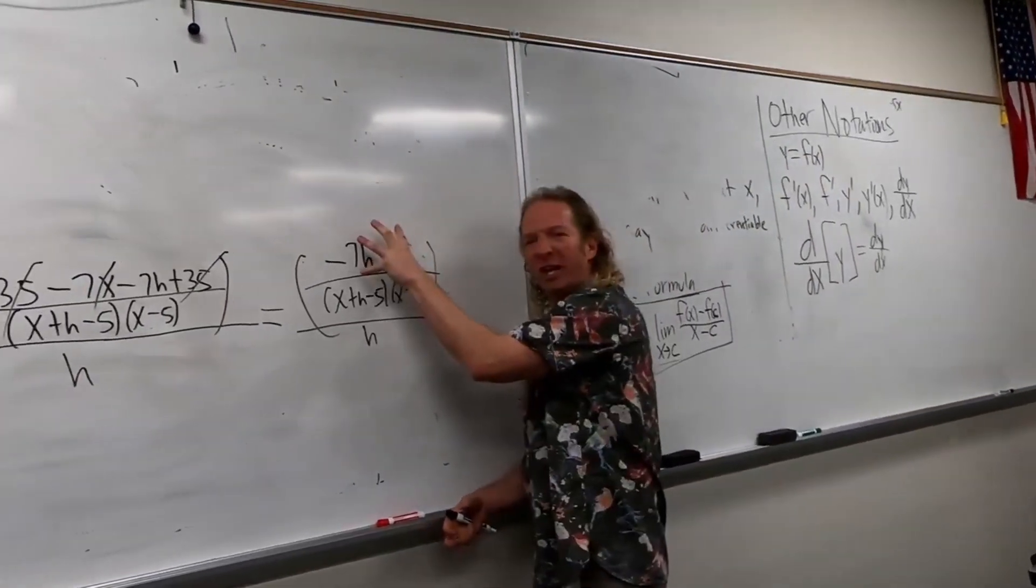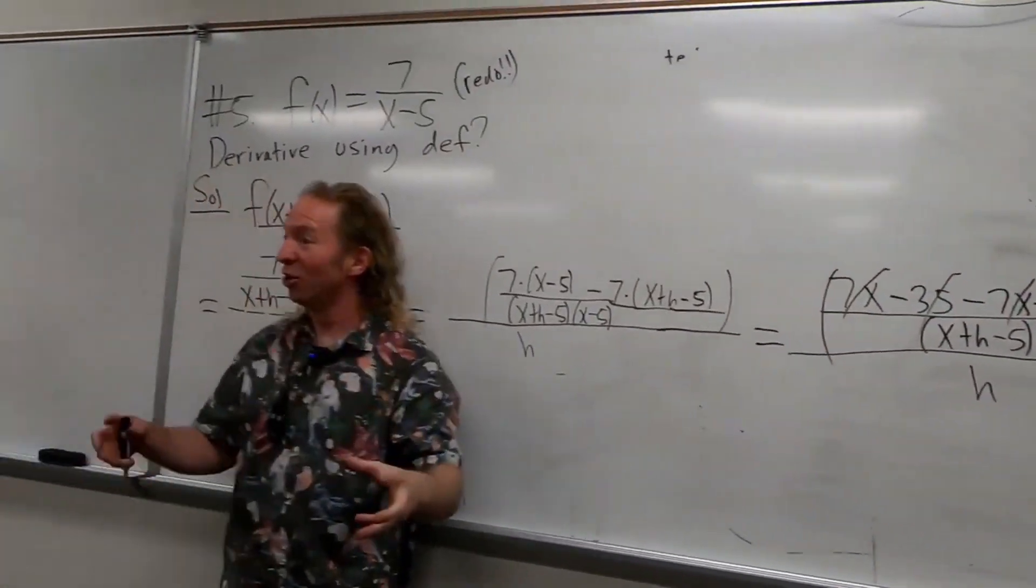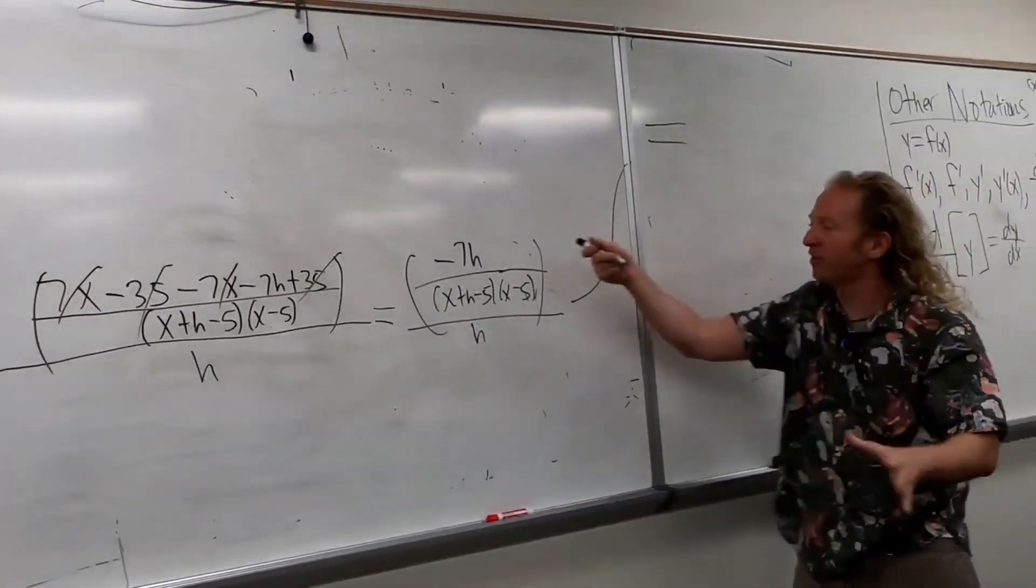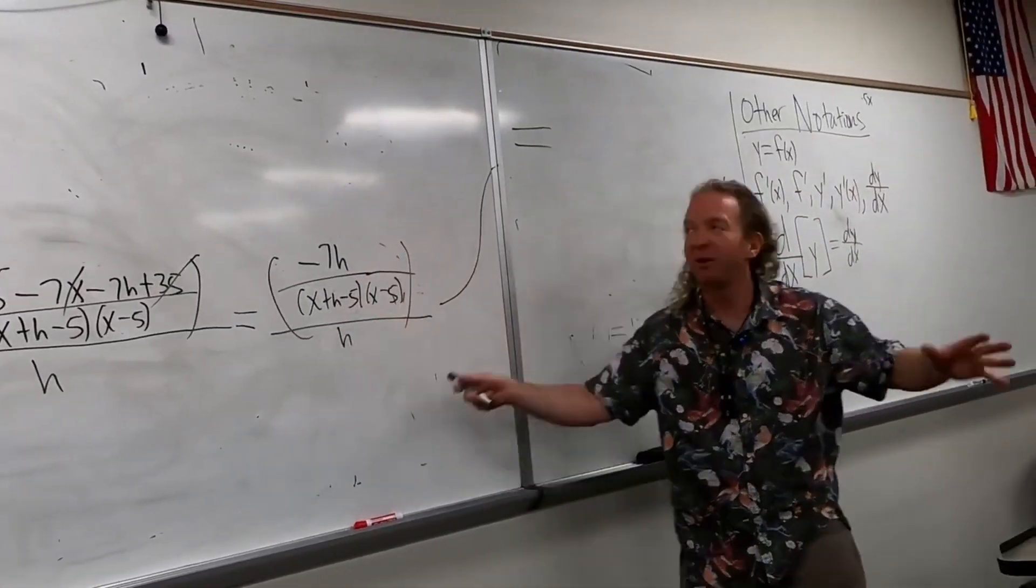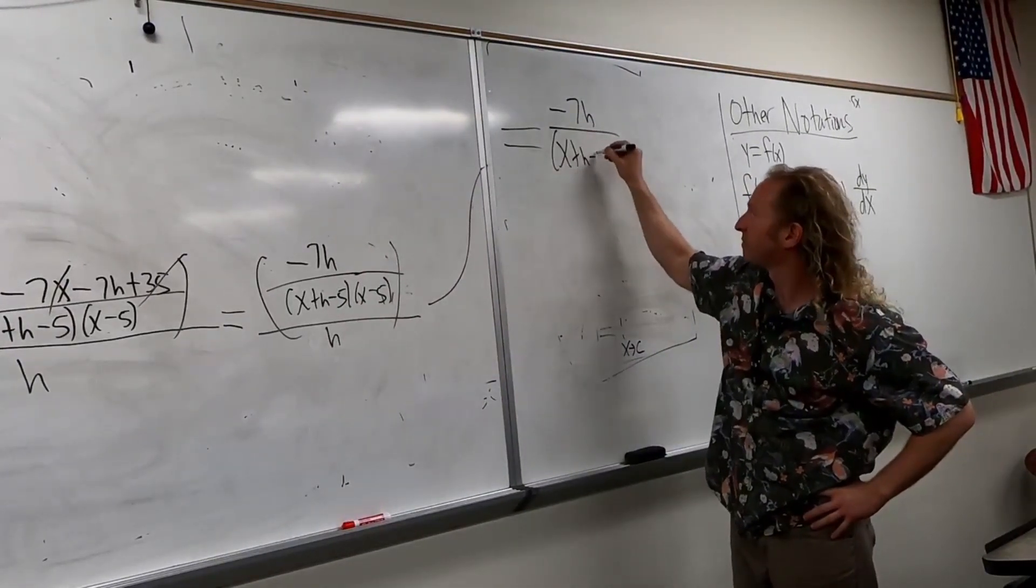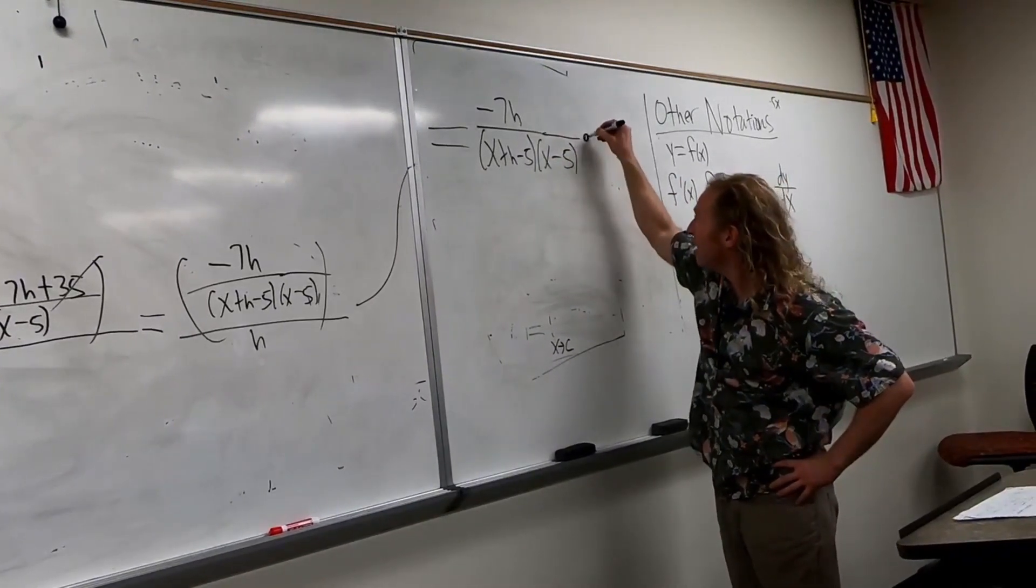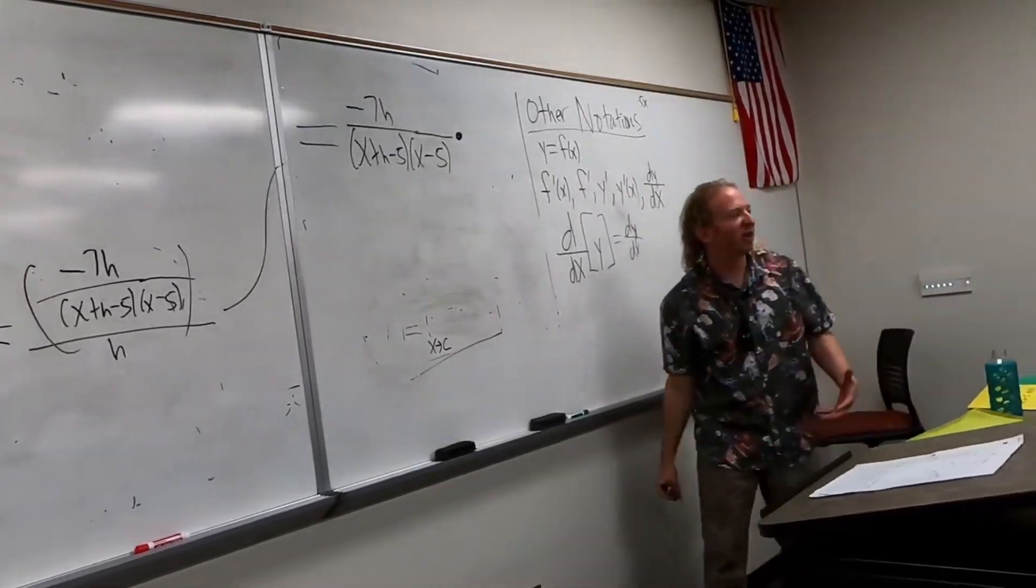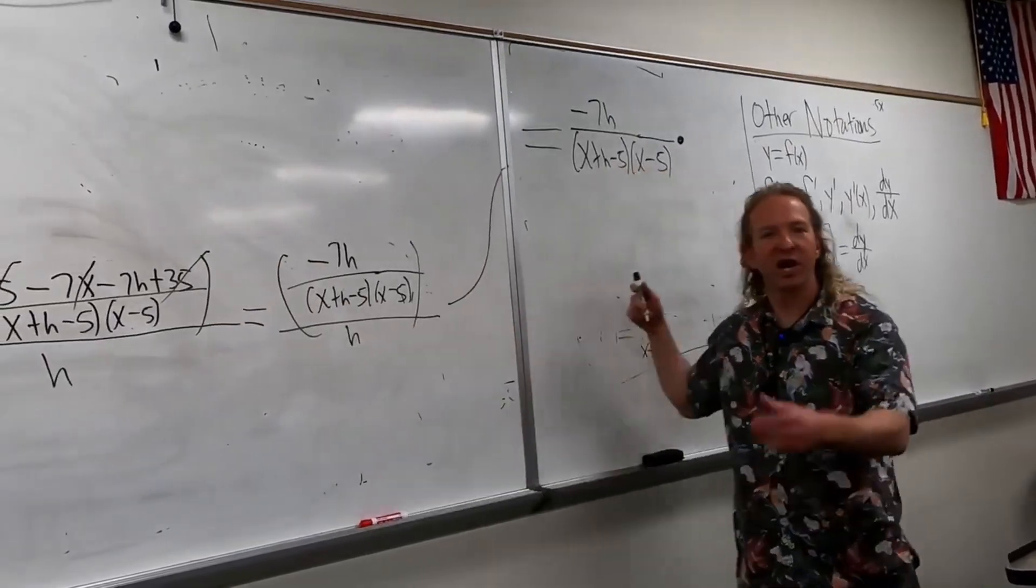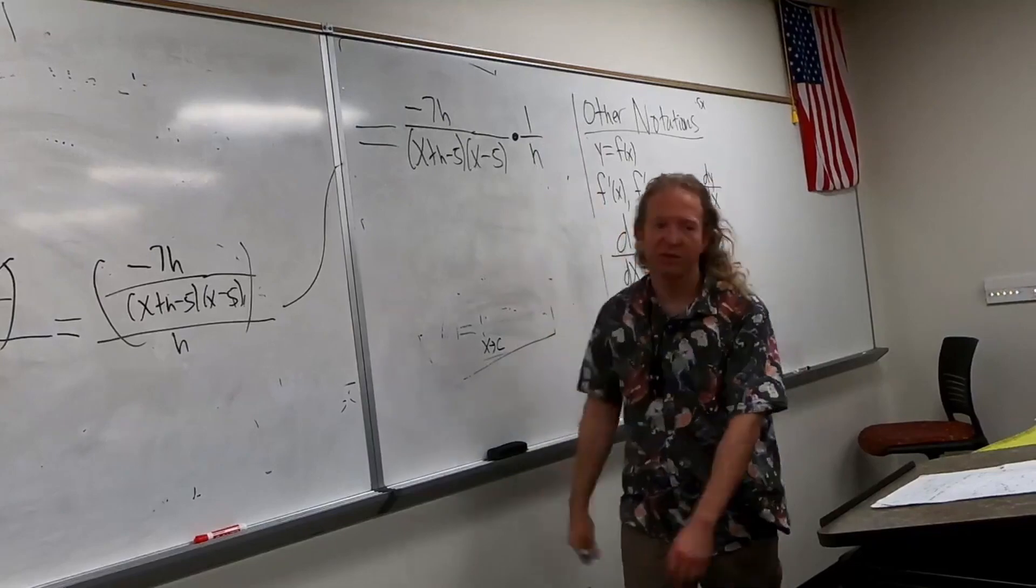Taking this whole thing and dividing by h. When you divide by h, what do you really multiply by? What's that called? The reciprocal! I love that word. Yes, the reciprocal. So, it's going to be all of this times one over h. So, this. So, we have x plus h minus five, x minus five times the reciprocal of h. One over h. Yeah, because h is really h over one. So, when you flip it, it's just one over h.